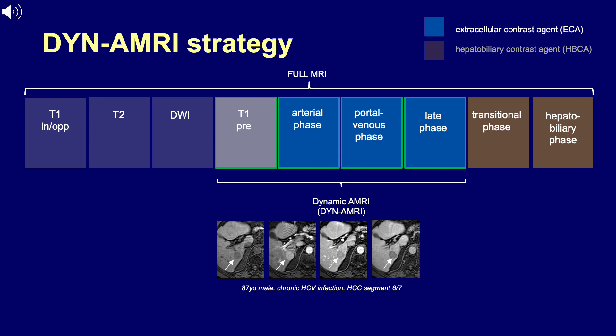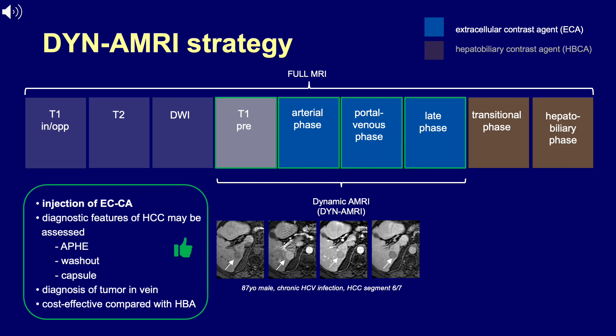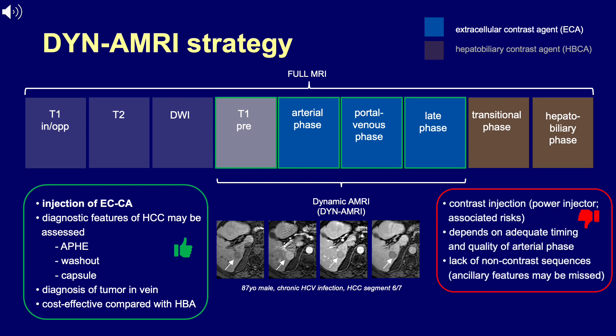The second approach is the so-called dynamic AMRI strategy, which relates to the injection of an extracellular contrast agent and the acquisition of a contrast dynamic only, including a pre-contrast T1-weighted sequence as baseline for enhancement. This approach allows assessment of diagnostic imaging features for definitive diagnosis of HCC, diagnosis of tumor in vein, and is more cost effective compared with a hepatobiliary contrast agent. On the downside, contrast injection is required, adequate timing of the contrast dynamic is essential, and there is a lack of non-contrast sequences which may provide ancillary imaging features.